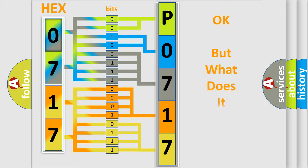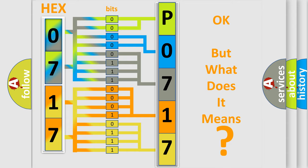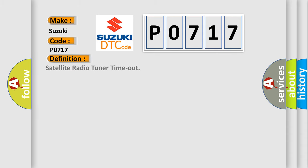The number itself does not make sense to us if we cannot assign information about what it actually expresses. So, what does the diagnostic trouble code P0717 interpret specifically for Suzuki car manufacturers? The basic definition is: Satellite radio tuner timeout.